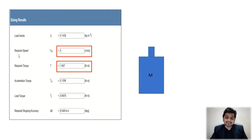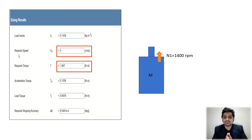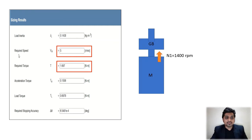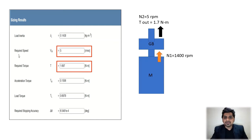Here is our motor. For a simple induction motor, the rated RPM is 1400 at standard 50 Hz frequency. We can vary this RPM using a VFD (Variable Frequency Drive), which reduces the frequency and thus the output RPM. However, there are limitations — we cannot go to very low frequencies. Our required output speed is 5 RPM, but the motor outputs 1400 RPM, so we cannot directly couple the motor to the system. That's why we need a gearbox: the motor output shaft connects to the gearbox input, where speed reduction occurs.